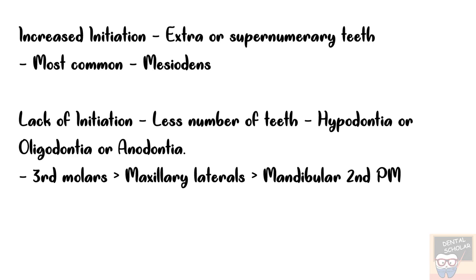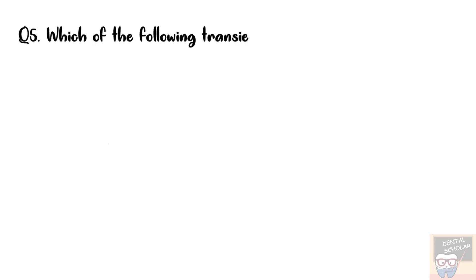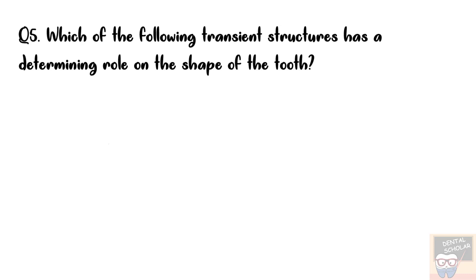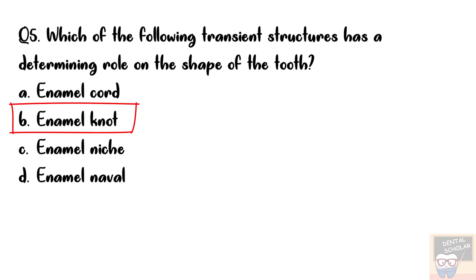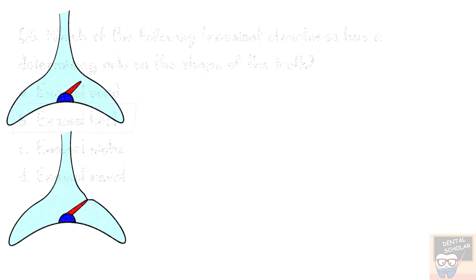Question number 5: Which of the following transient structures has a determining role on the shape of the tooth? Options are enamel cord, enamel knot, enamel niche, and enamel navel. The correct answer is option B, enamel knot. All these are transient structures seen in the cap stage.